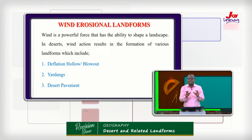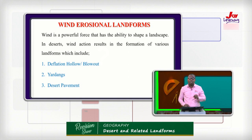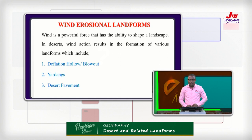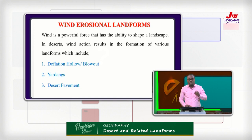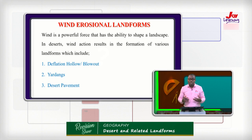As a quick recap: a desert is a barren area of landscape where little precipitation is received and conditions are hostile to plant and animal life. The two main classifications are hot deserts and cold or temperate mid-latitude deserts. Types include hot and dry deserts, cold winter deserts, coastal deserts, and polar deserts. Tonight we continue from where we left off, starting with wind erosion landforms.